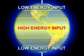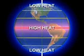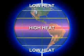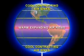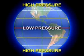Since insolation is strongest when the sun is directly overhead, the equator is heated more strongly than other places on Earth. Heated air rises and cold air sinks, resulting in low surface pressure at the equator and high surface pressure at the poles.